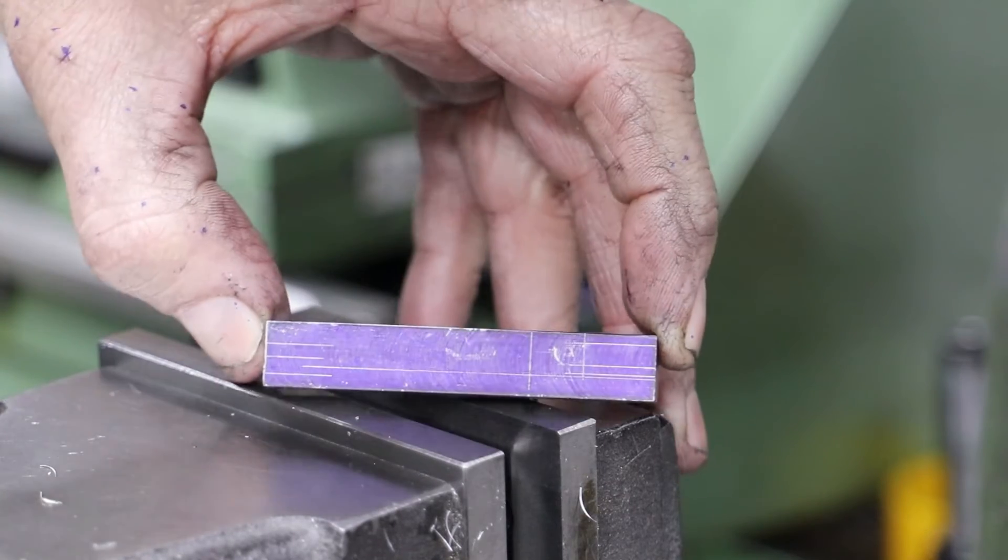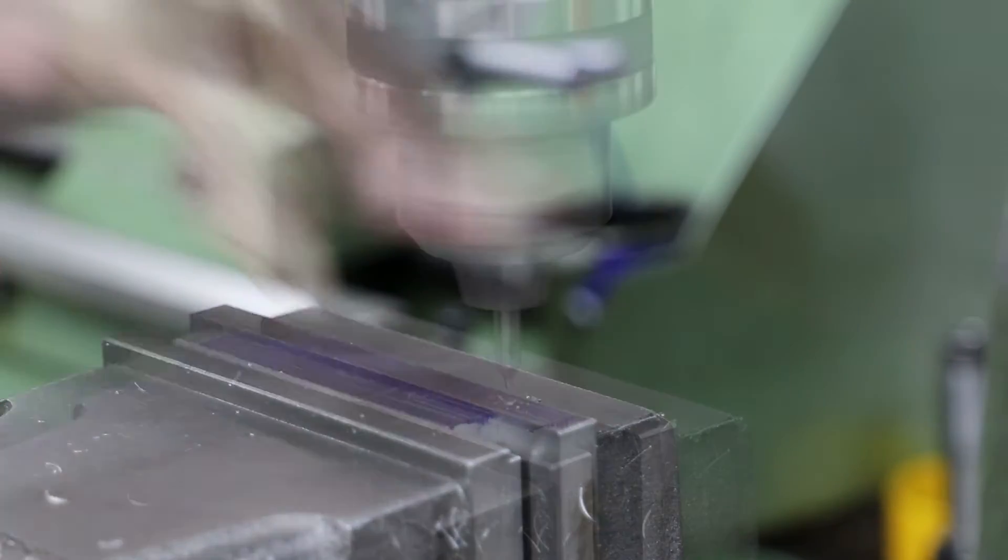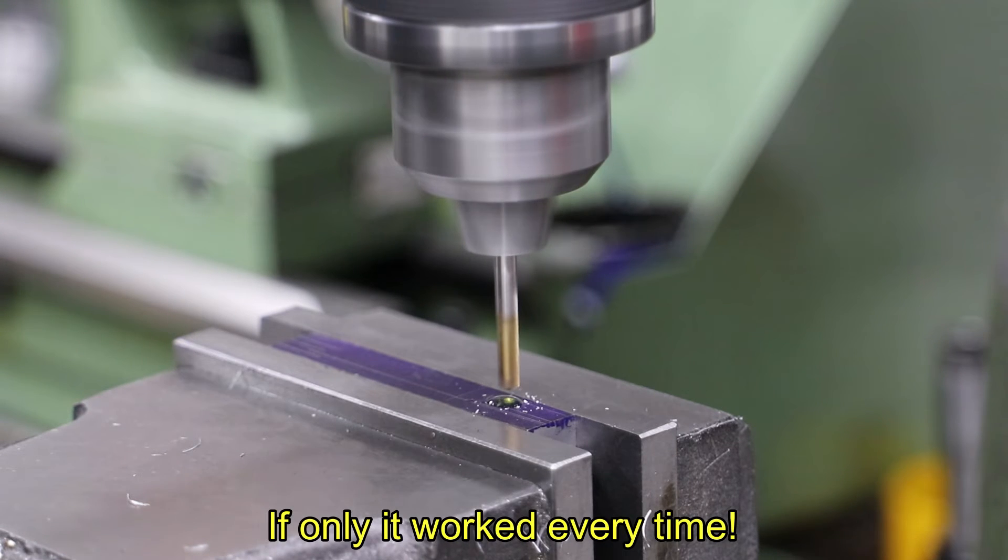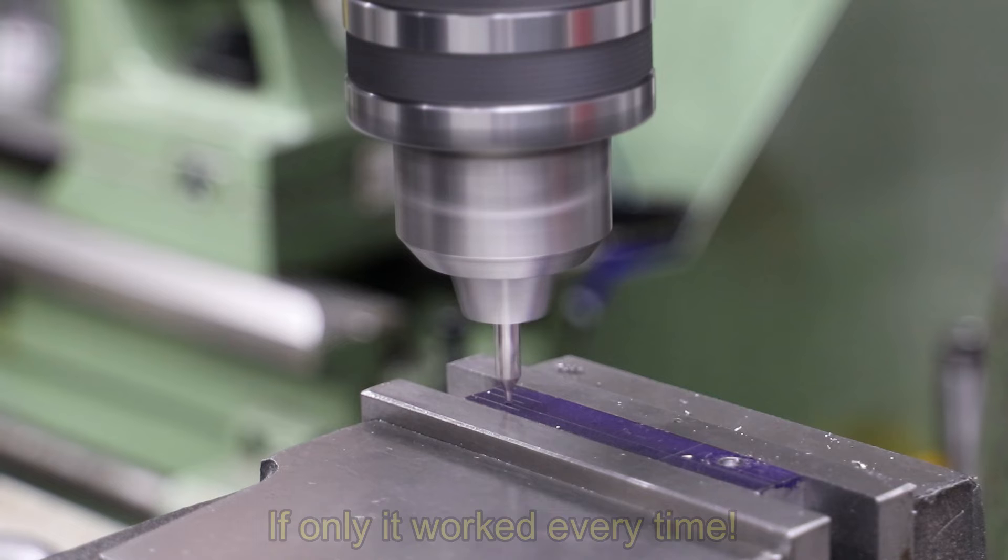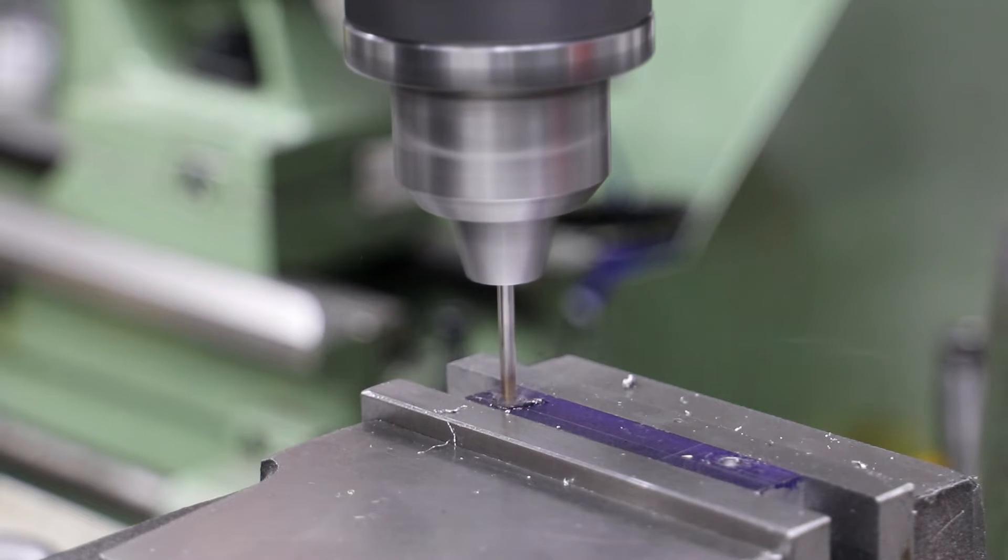Next I apply some blue and partially mark out the outline. As is normal for me, this is just to help prevent me from making some stupid mistake whilst I'm working from the DRO. I then go on to drill a hole at the end of the slots at each end, 3mm for the combination lever and 4mm for the expansion link.